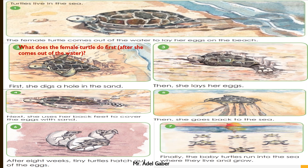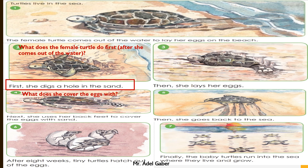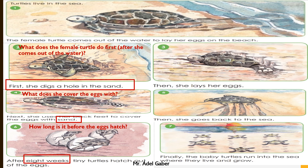What does the female turtle do first after she comes out of the water? Yes, first she digs a hole in the sand. What does she cover the eggs with? Yes, sand. How long is it before the eggs hatch? Eight weeks.